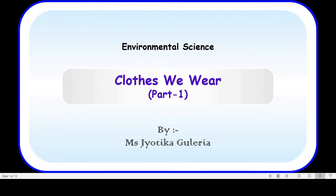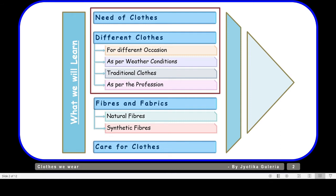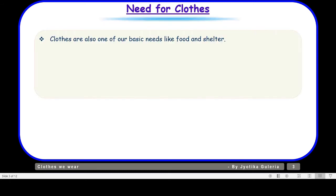This topic has been divided into different parts. In the first part we will talk about the need of clothes. In the second part we will talk about different clothes for different occasions — as per weather conditions, traditional clothes, or clothes as per the profession. Then we have fibers and fabrics, covering natural and synthetic fibers, and finally how to take care of clothes. Today in Part 1 we will talk about the need of clothes and different types of clothes.